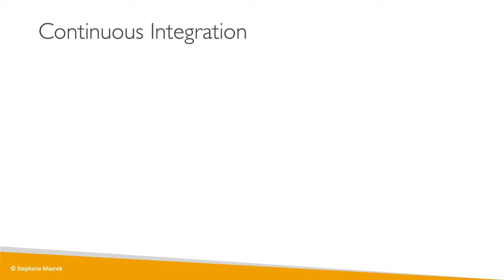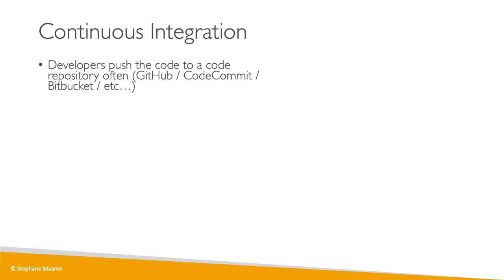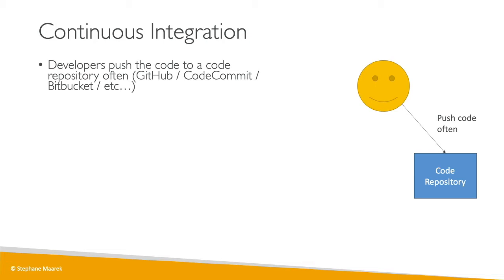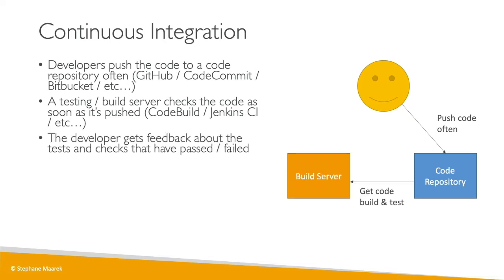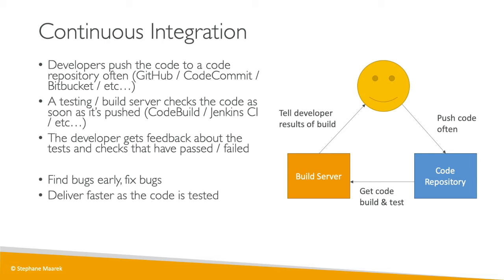So what is CICD? CICD stands for continuous integration and then continuous delivery or deployment. Starting with continuous integration: developers push code to a code repository often — it could be GitHub, CodeCommit, or Bitbucket. As soon as the code is pushed, a testing or build server checks the code. We do this to make sure the code can be built and tested correctly, and the developer gets feedback about what tests and checks have passed or failed. This way we can find bugs early, fix them, and deliver code faster as it is tested continuously.